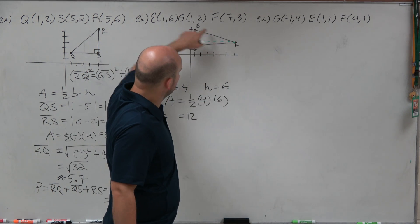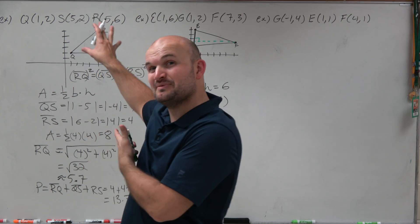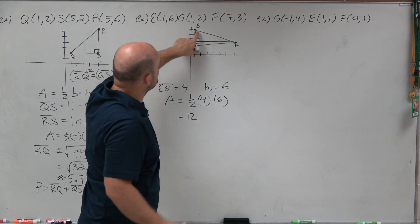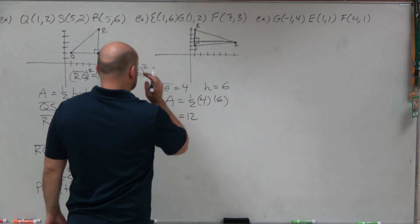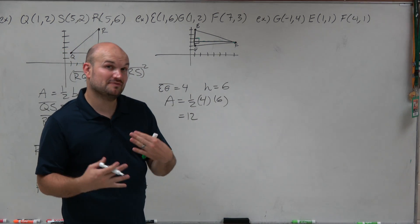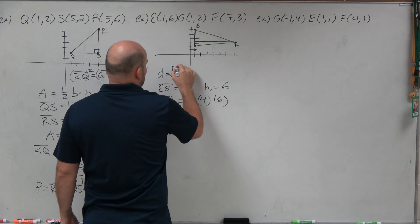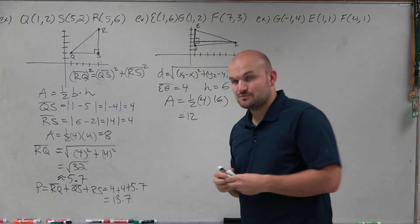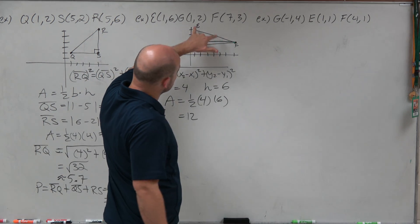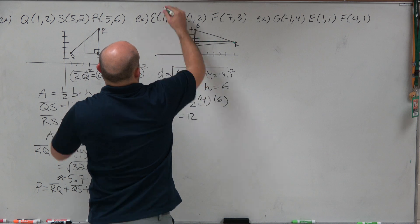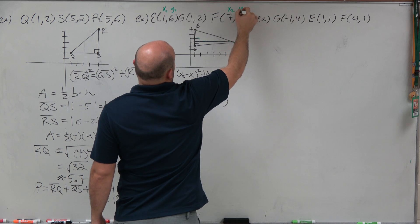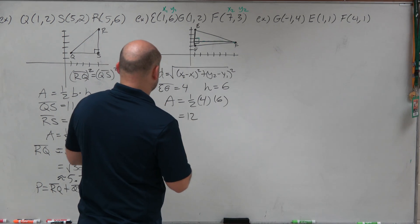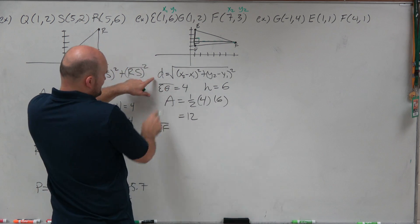To find the perimeter, we notice we have two diagonals and we don't have a right triangle, so we can't directly use the Pythagorean theorem. However, the height does show us that we can create two different right triangles. To remind you of the distance formula: distance equals the square root of (x2 minus x1) squared plus (y2 minus y1) squared, where x2, x1, y2, and y1 are coordinates between any two points.